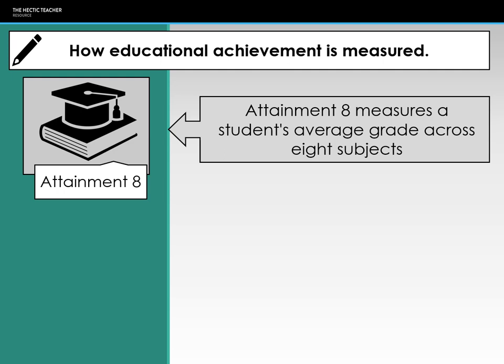For English, if you take both English literature and English language, they take the highest grade and double-weight it. Group two consists of the EBAC subjects: sciences, computer science, geography, history, and languages. Any remaining spots to make up the eight are filled by other GCSE subjects — arts, vocational qualifications, and similar subjects.